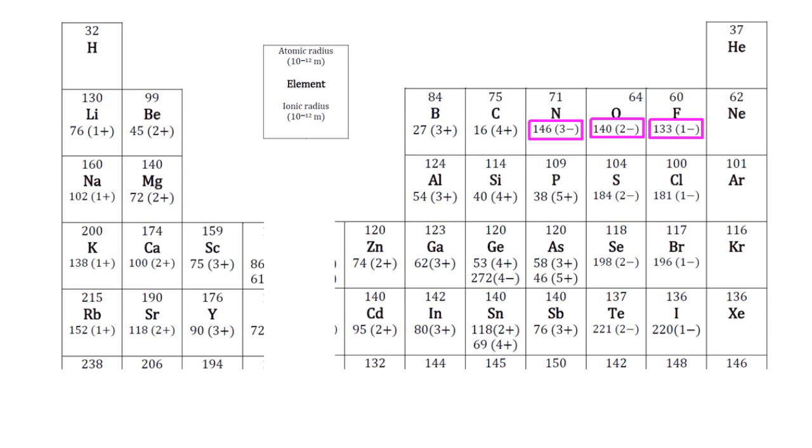As we go across those three, what's the same about those three? Well, they all have the same electronic configuration as neon. They all have 10 electrons in total. So how come they're different sizes?